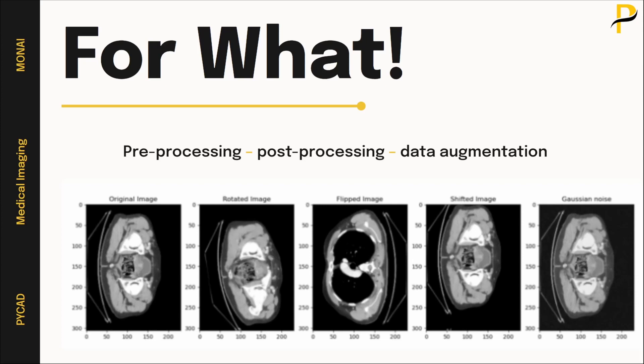MONAI can be used for a lot of things including pre-processing, post-processing, and data augmentation — all these tools for building your deep learning models for image classification or segmentation. You can see here some examples of the same image after rotation, flipping, shifting, and applying Gaussian noise. There are also many other types of noise that can be applied.